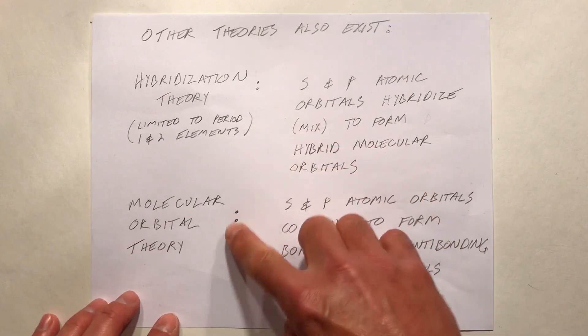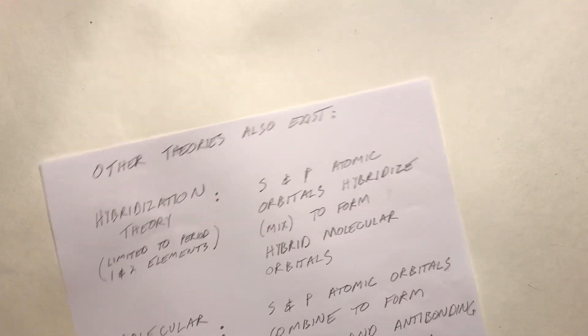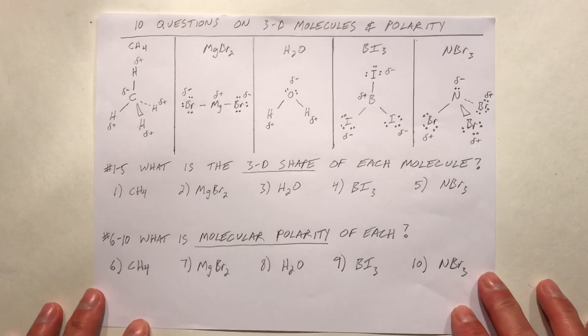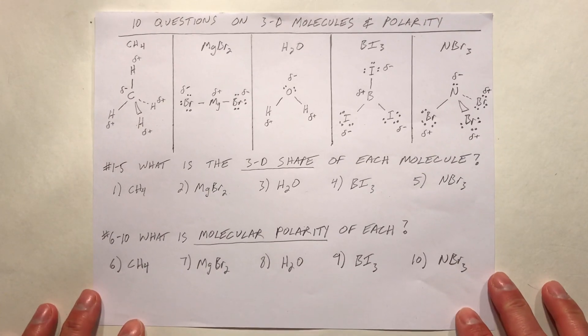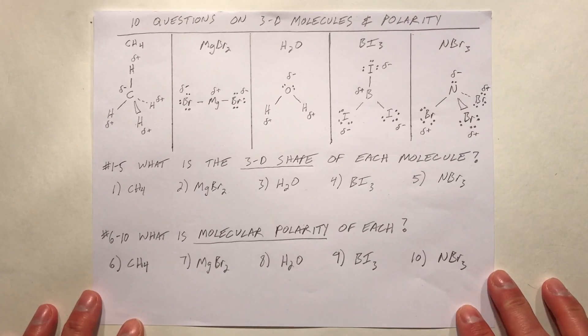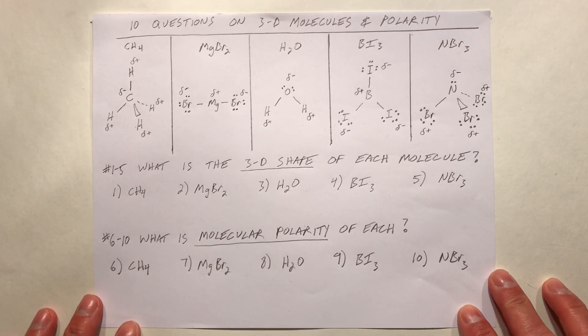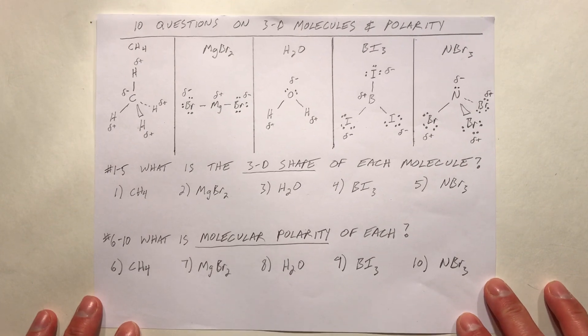Hybridization theory and molecular orbital theory are really beyond the scope of a first-year chemistry course. But if you understand what we did in this video, you should be able to answer these ten questions.